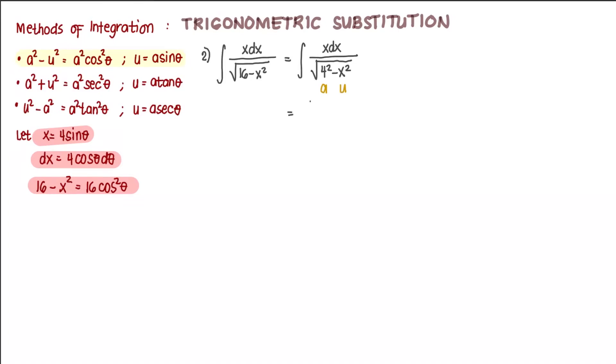So we substitute. x is 4 sine of theta. dx is 4 cosine of theta d theta. And for the radical, radicand square root of, this is 16 cosine squared of theta.